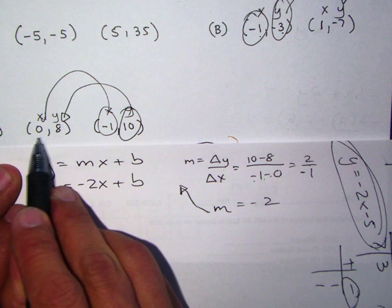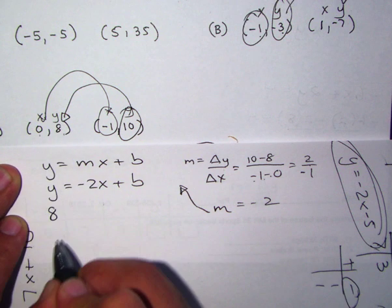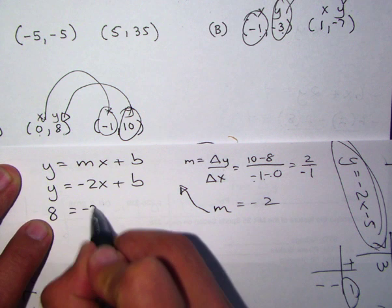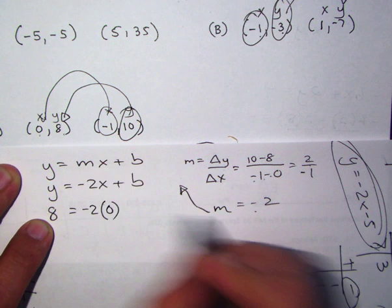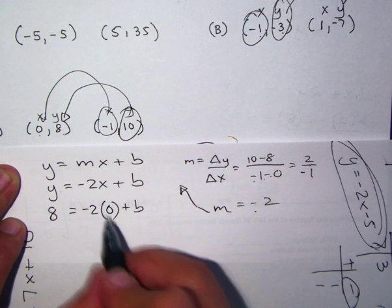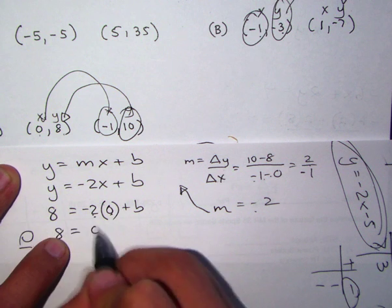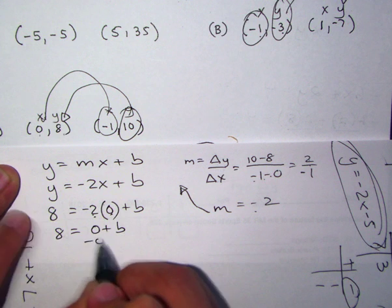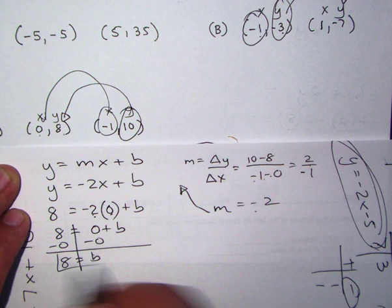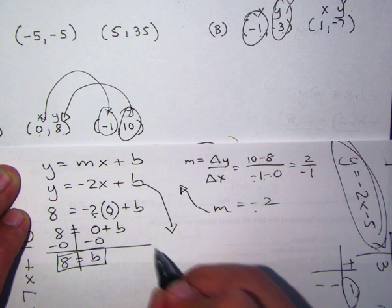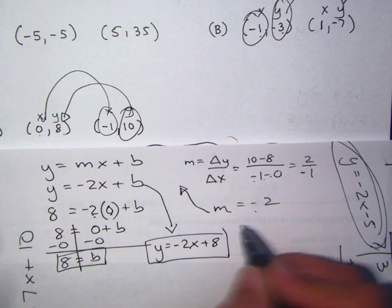So now we're going to go ahead and plug in these numbers into the equation. I like 0, 8. So 8 is here, equals negative 2 times x, which is 0, plus b. All right. What's negative 2 times 0? It's not negative 2, it's 0. So 0 plus b. Take away 0, take away 0 both sides, which you don't have to because my answer is still 8. So what's my equation? Y is equal to negative 2x plus 8. And there's your answer.